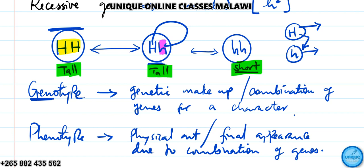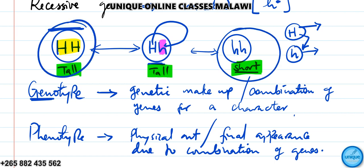Phenotype comes after genotype. When organisms have genes that are exactly the same — a pure combination — we call that a pure breed. Here we have pure breed number one and pure breed number two — these are the pure breeds.